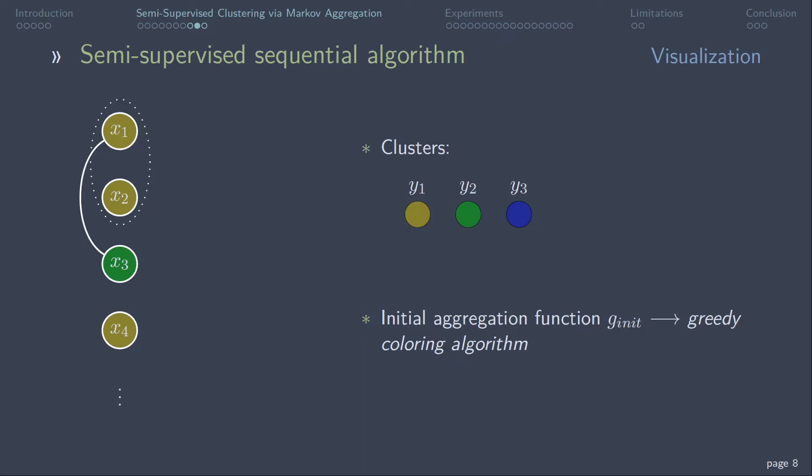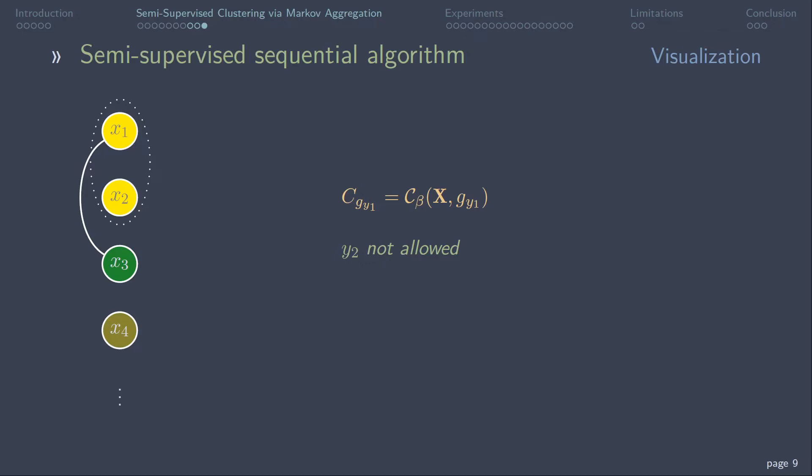Now we start with the sequential Markov aggregation algorithm. Nodes connected by must-link constraints are treated jointly. The nodes are assigned to the first class Y1, while the rest of the nodes keep their color. Then the cost for this graph coloring is computed and stored. Afterwards, the node is assigned to the next class label. However, due to the cannot-link constraint, Y2 is not allowed and skipped. The last class label is allowed and the cost is computed. Then, in the last step, the node is assigned to the class label that achieved the lowest cost. In this case, the blue class Y3.